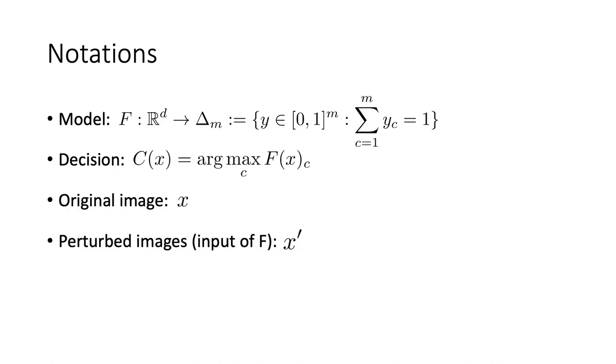Before we delve into details, let's introduce the notations to be used. We will use F to denote a model which maps an input image to the probability vector. We will use big C to denote the map that maps an input to the output label, which is the class with maximum probability. We will use small x to denote the original image, and x' to denote the perturbed image or an arbitrary input variable of the model F.